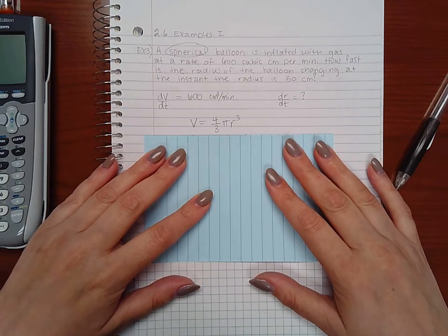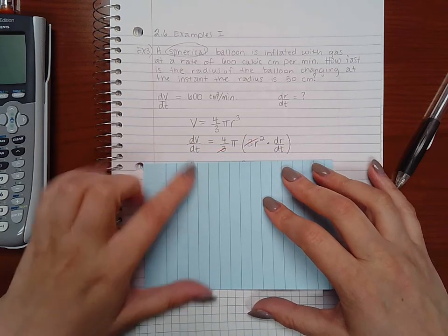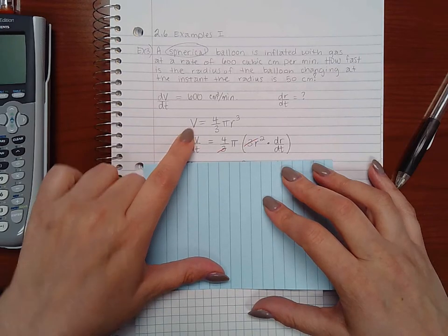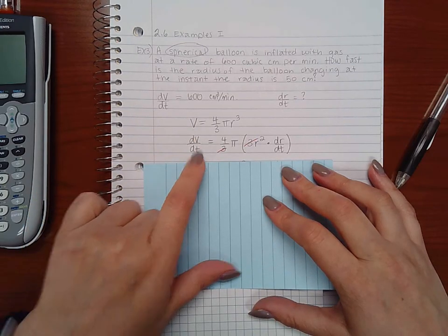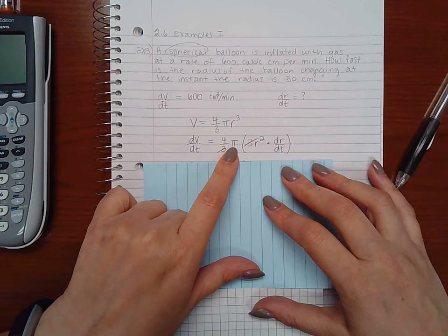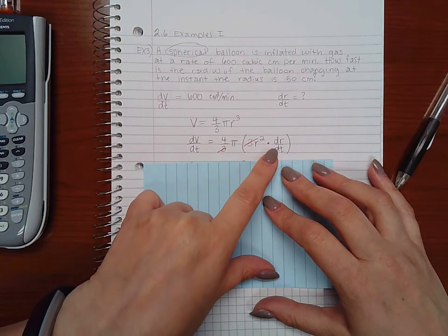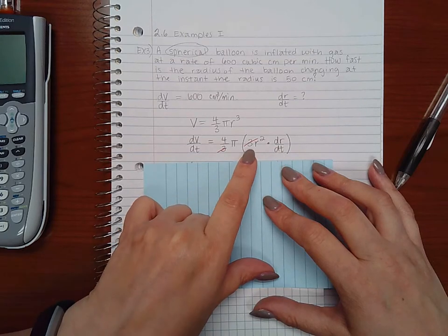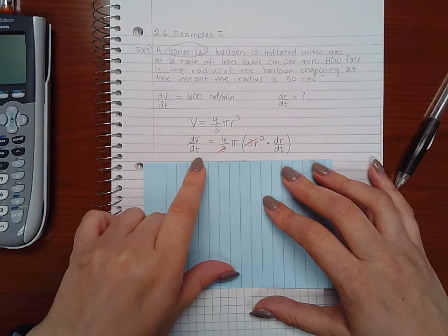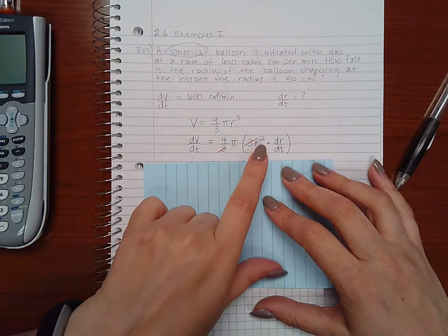And if I take the derivative of each side, I end up with the derivative of the volume with respect to t is dV/dt. Four-thirds pi is my constant multiplier, and the derivative of r cubed is three r squared times dr/dt, because my base is not a t and I am taking the derivative with respect to t.